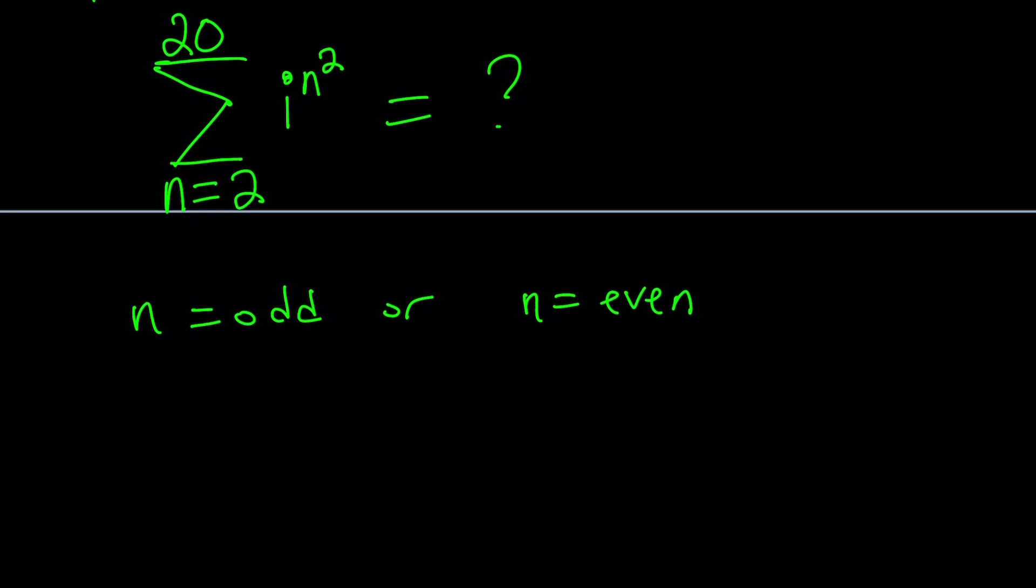I can basically express it as 2k plus 1. And then n squared, because my exponent, notice that my exponent is not n, it is n squared. It's a perfect square. n is an integer, right? I hope that makes sense.